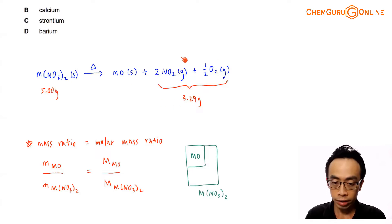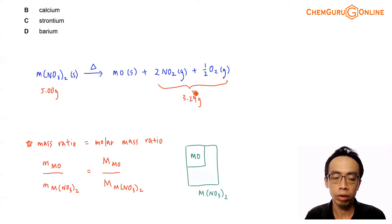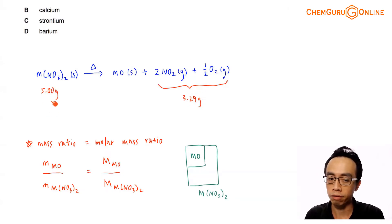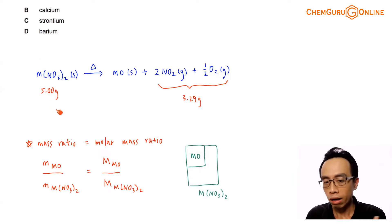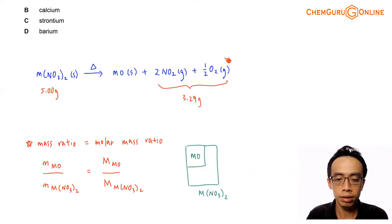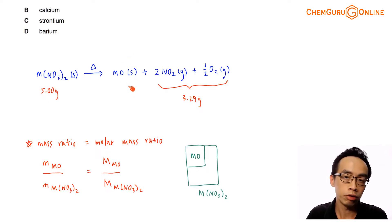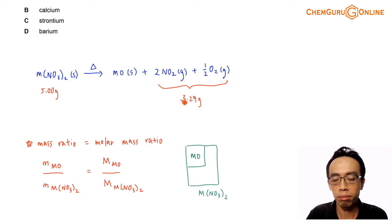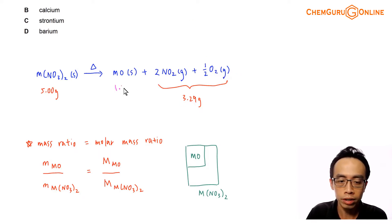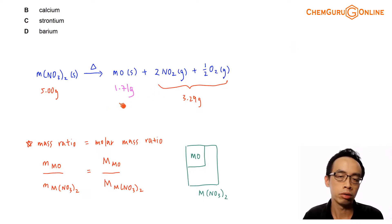All the mass lost as gases is 3.29g. So what we can do is work out the difference. At the beginning we have 5g of the nitrate, and the question states the loss in mass is 3.29g. So the mass of the metal oxide is just the difference: 5.00g minus 3.29g, which leaves us with 1.71g of metal oxide.